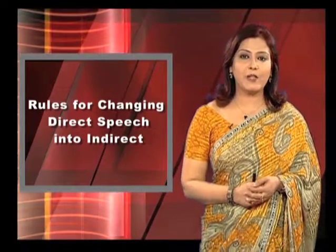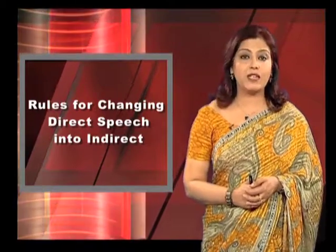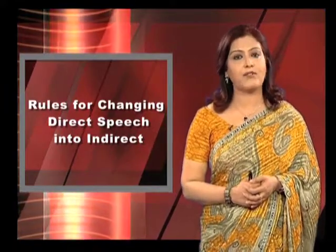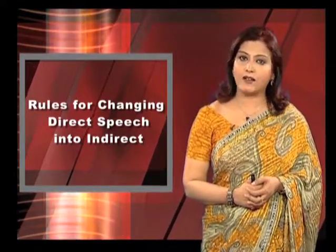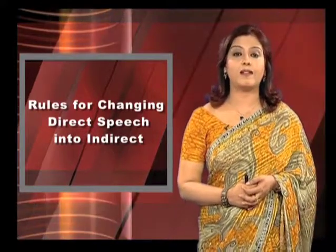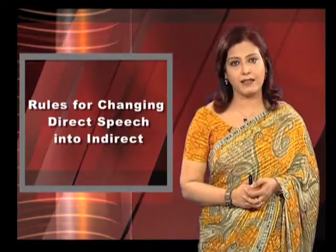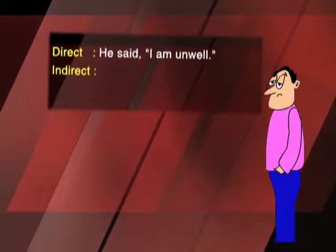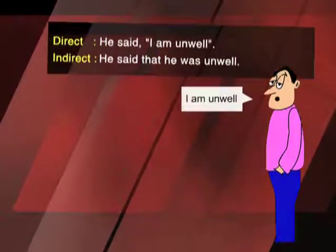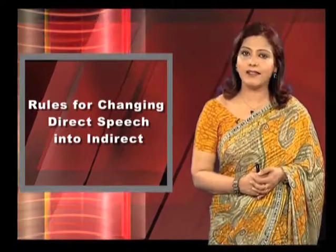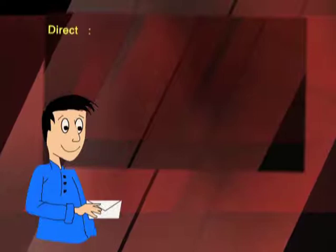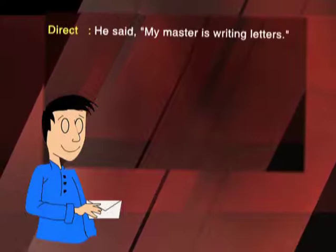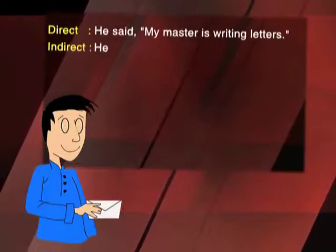Rules for changing direct speech into indirect: When the reporting or principal verb is in the past tense, all present tenses of direct speech are changed into the corresponding past tense. The simple present becomes simple past. Direct: He said, 'I am unwell.' Indirect: He said that he was unwell. A present continuous becomes a past continuous. Direct: He said, 'My master is writing letters.' Indirect: He said that his master was writing letters.